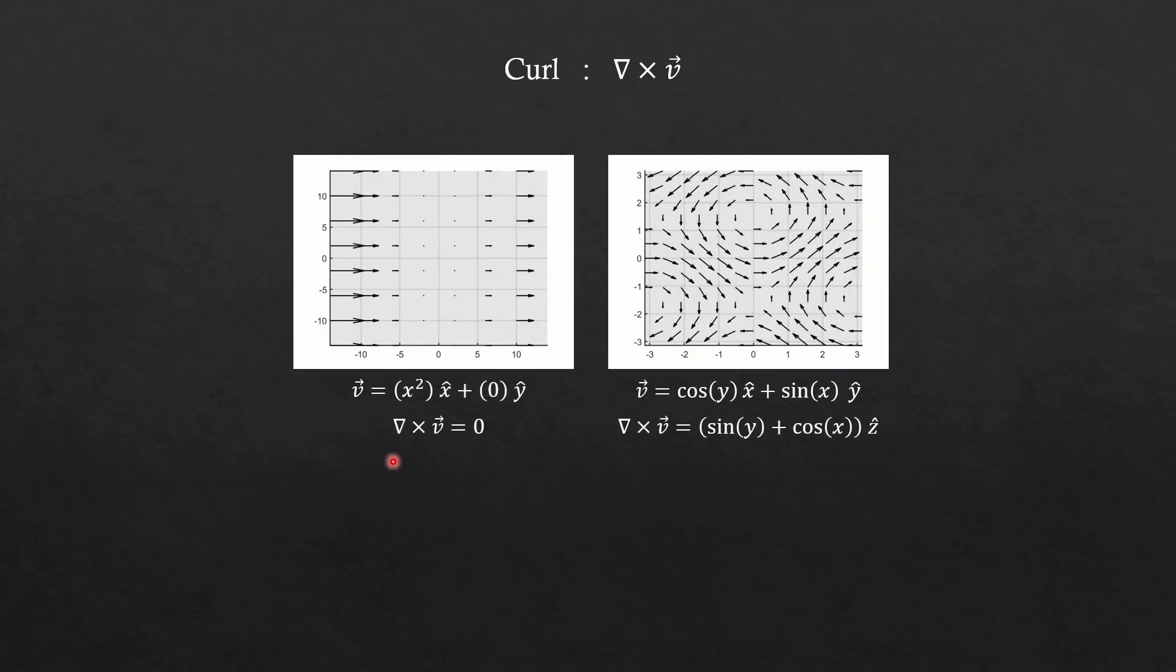Similarly, the curl of a vector being zero means it's an irrotational flow, because the curl of a vector tells us whether the field is rotating or not. These are easy to understand. Now, let's take a look at the two vector identities I mentioned at the beginning.